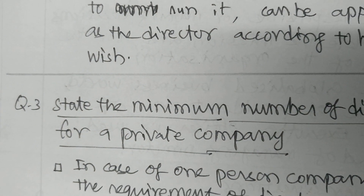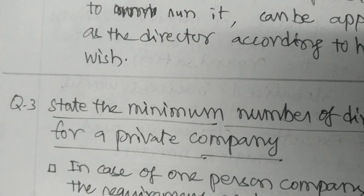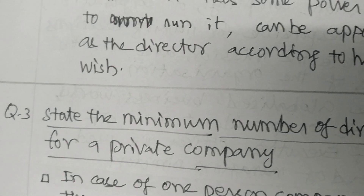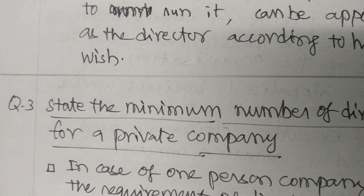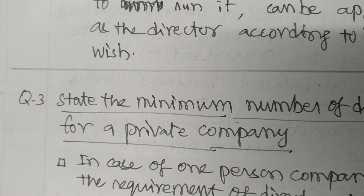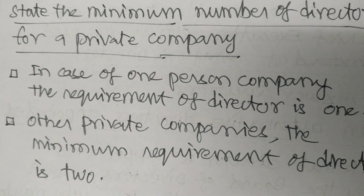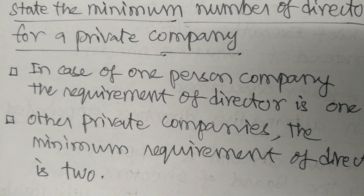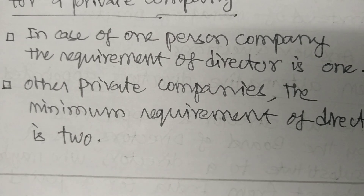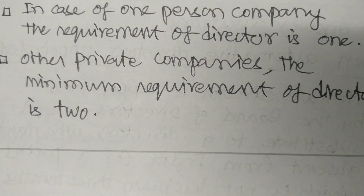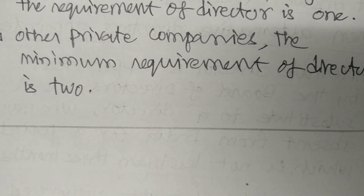State the minimum number of Directors for a private company. In the case of a one person company, the requirement of Director is 1. For other private companies, the minimum requirement of Directors is 2.